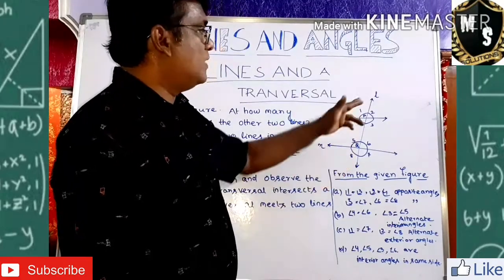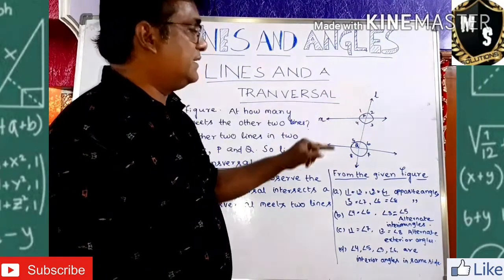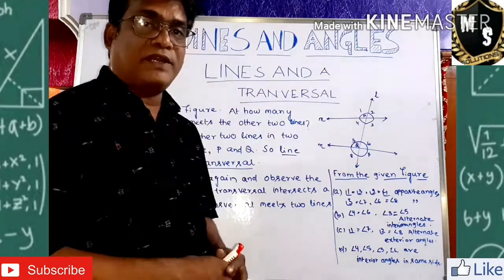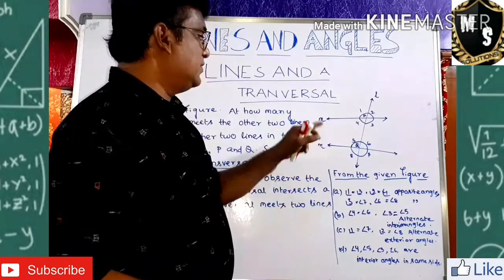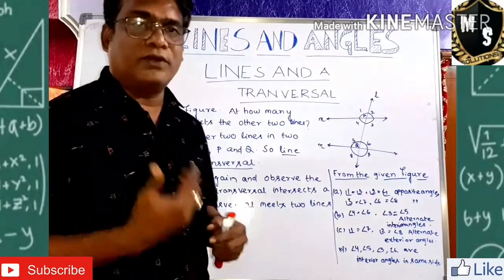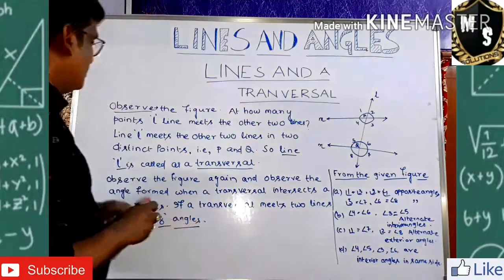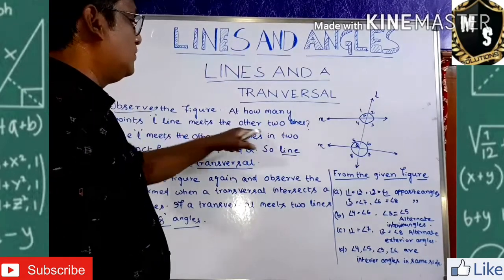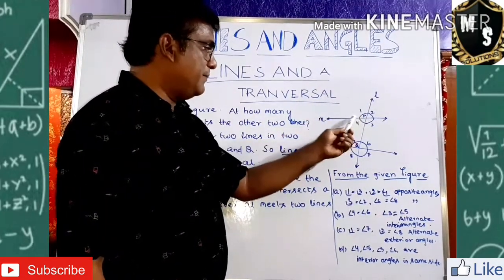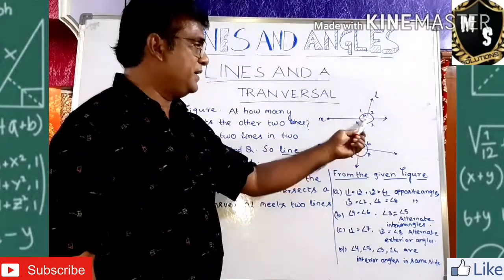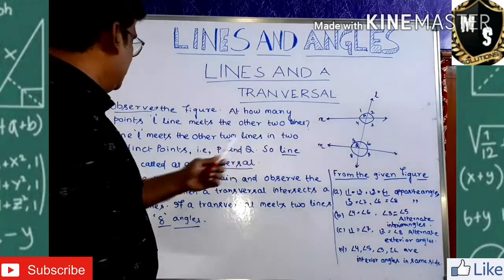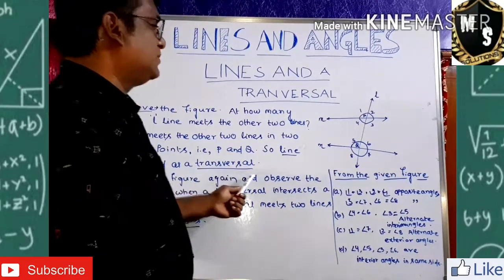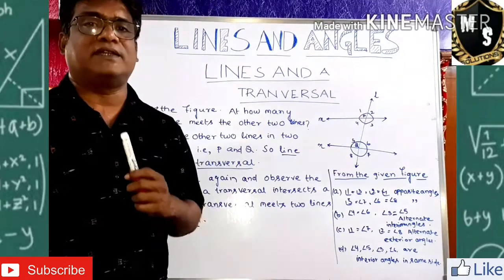These two lines M and N are intersected by another line called L. So L line is intersecting the M line and the N line at two distinct points called P and Q. After intersecting, the line L is called a transversal. What is this L line called? It is called a transversal — but why?